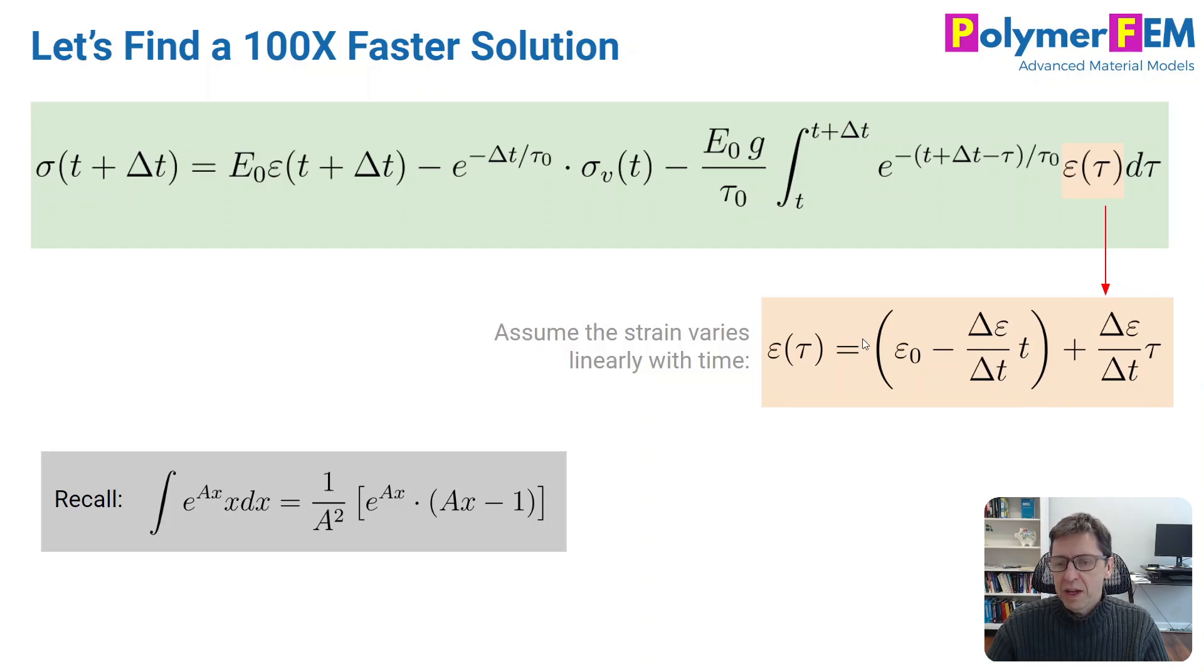This is epsilon of tau. If tau equals t, which is the lower value here, and you plug that in here for tau, you'll see that this becomes epsilon zero, so that's the initial value of the strain. If you plug in tau equal to t plus delta t, you get epsilon zero plus delta epsilon. So it works exactly like we wanted it to work. This is a linear function of tau, which has the correct strain values at the beginning and the end of the increment.